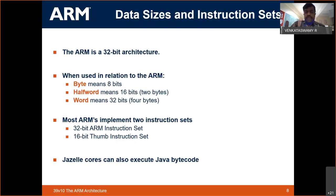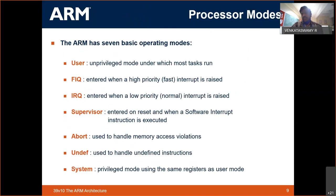Normally you load a binary program into memory and run it. Here, ARM provides a hardware environment that serves as a runtime for Java programs. That means you can directly run your Java program on the ARM microprocessor — that is one unique feature of the ARM microprocessor.